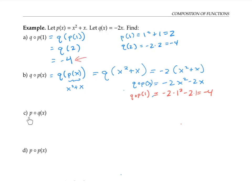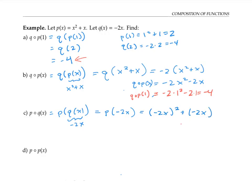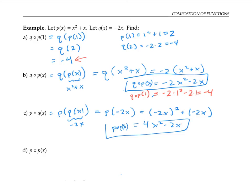Let's try p composed with q of x. I rewrite this as p of q of x, and working from the inside out, I replace q of x with negative two x. So I need to compute p of negative two x. Plugging negative two x everywhere I see an x in the formula for p — using parentheses carefully — that's negative two x quantity squared plus negative two x, which simplifies to four x squared minus two x. Notice that I got different expressions for q composed with p of x and for p composed with q of x — once again showing that q composed with p is not necessarily equal to p composed with q.